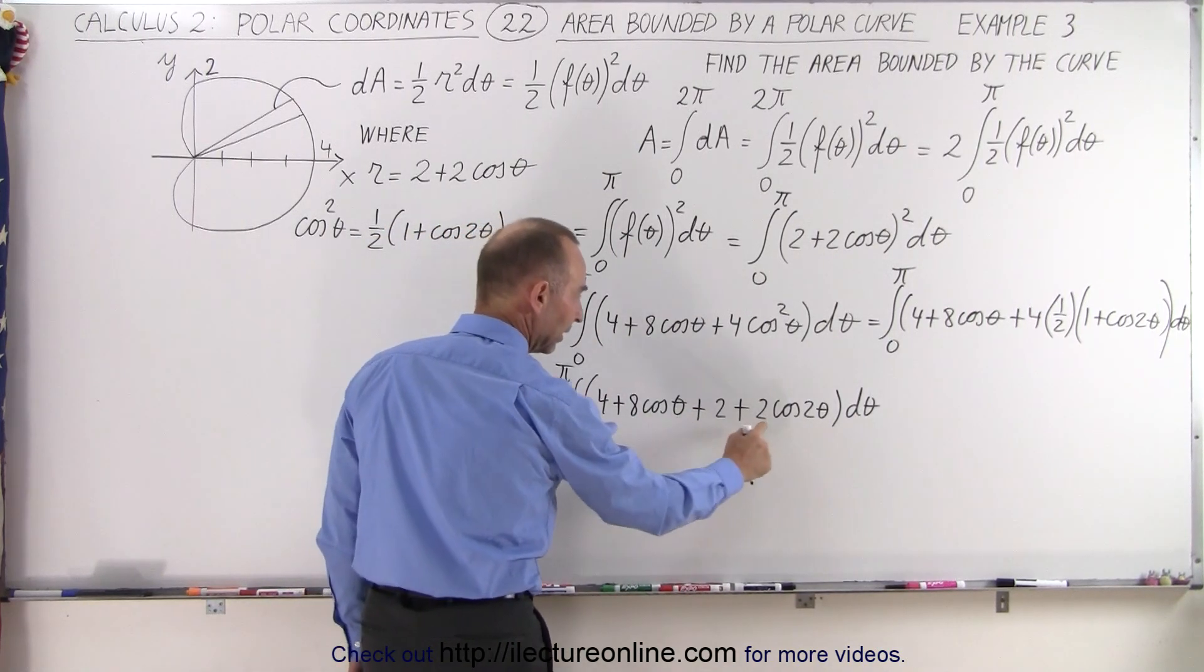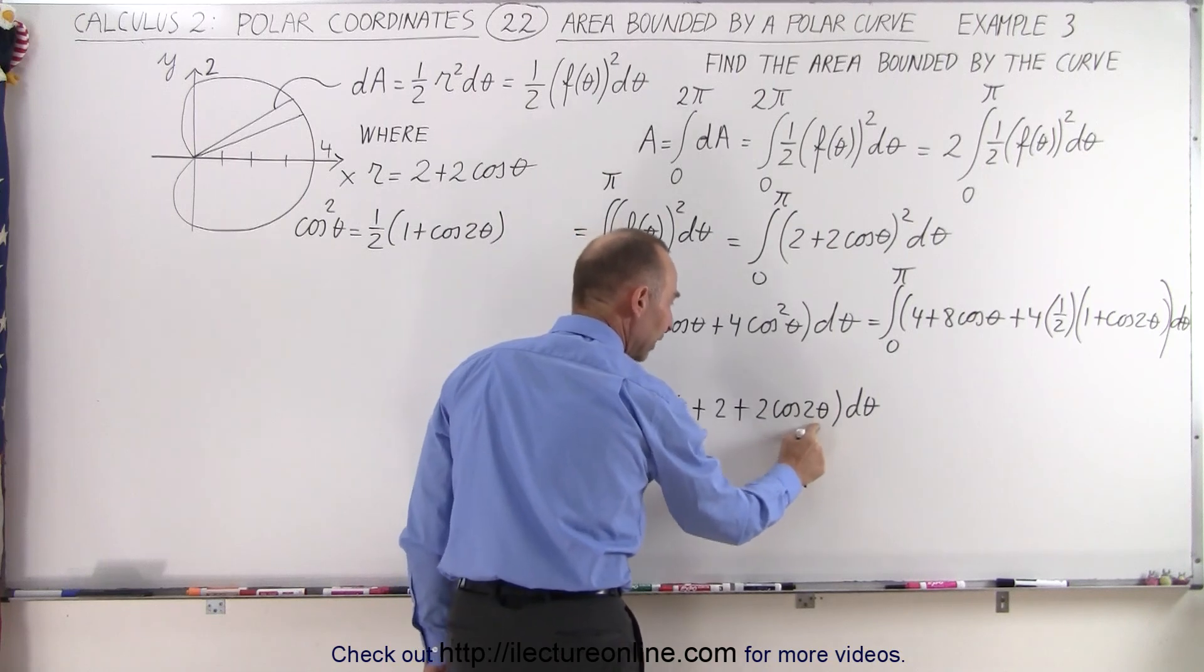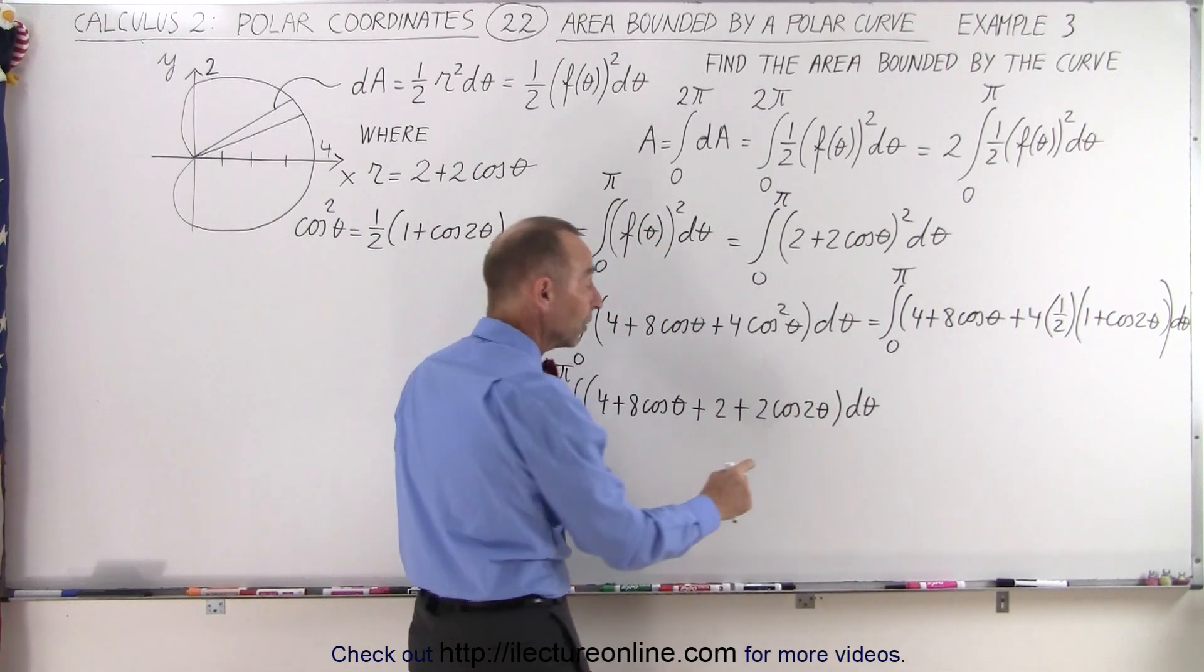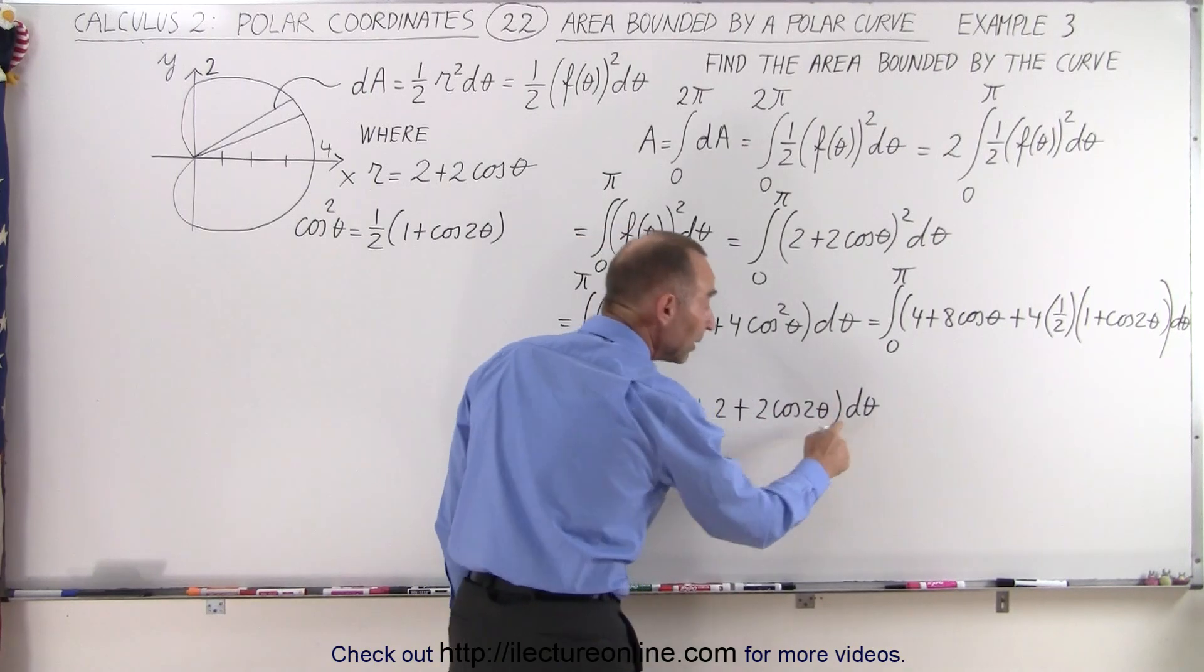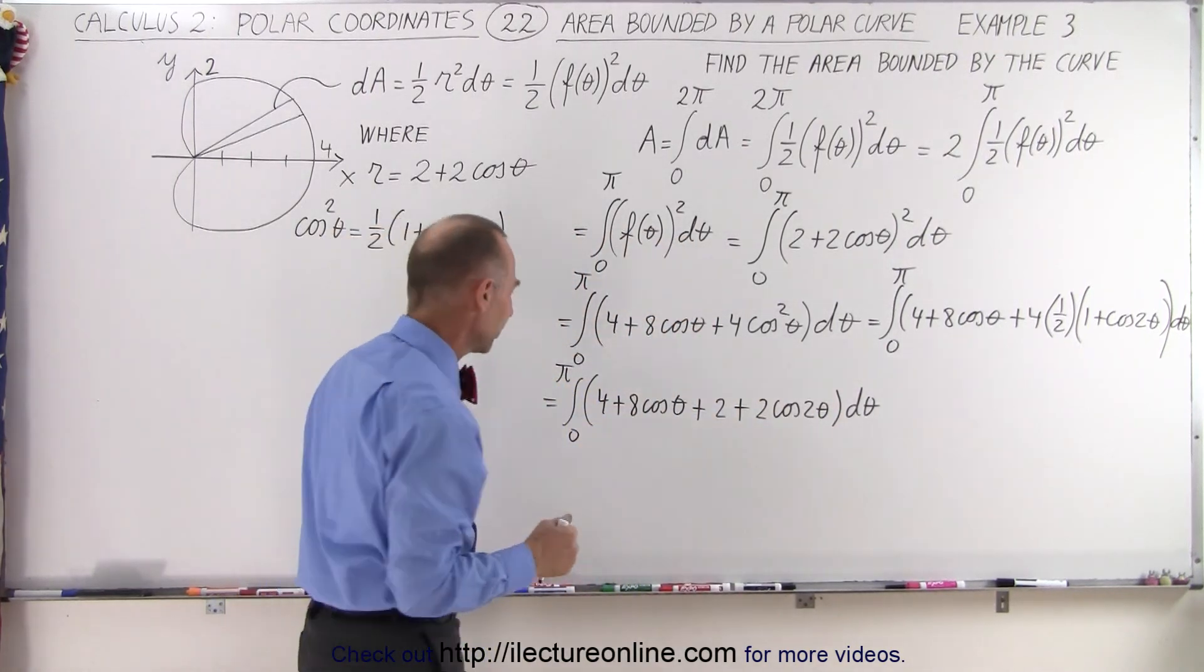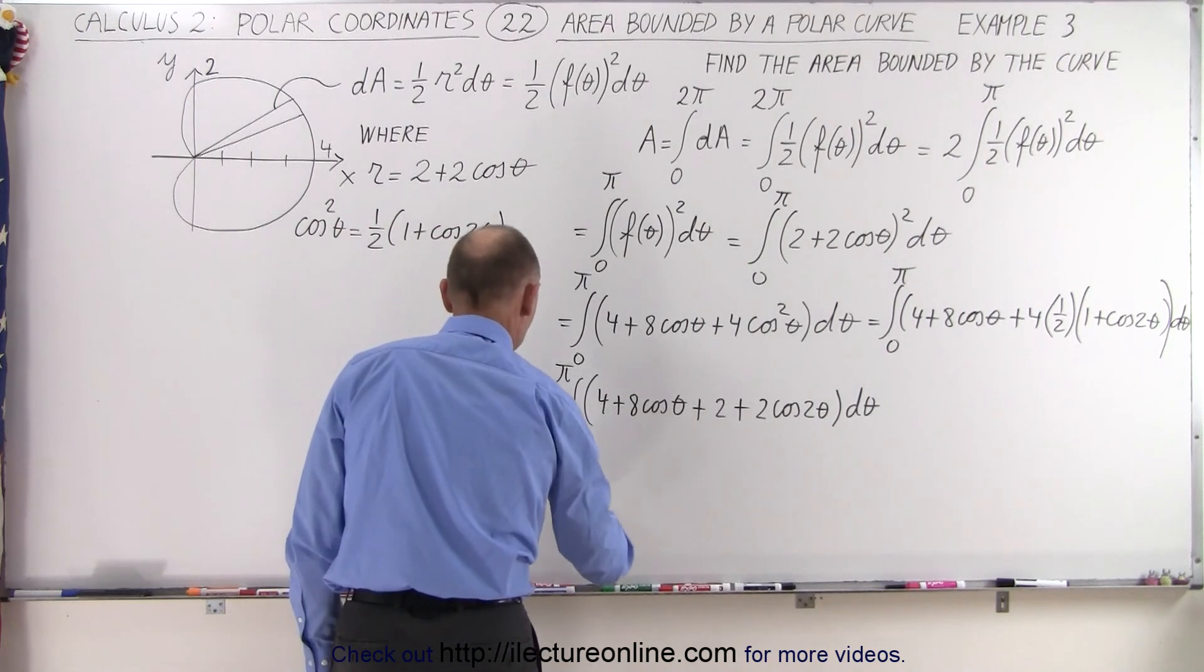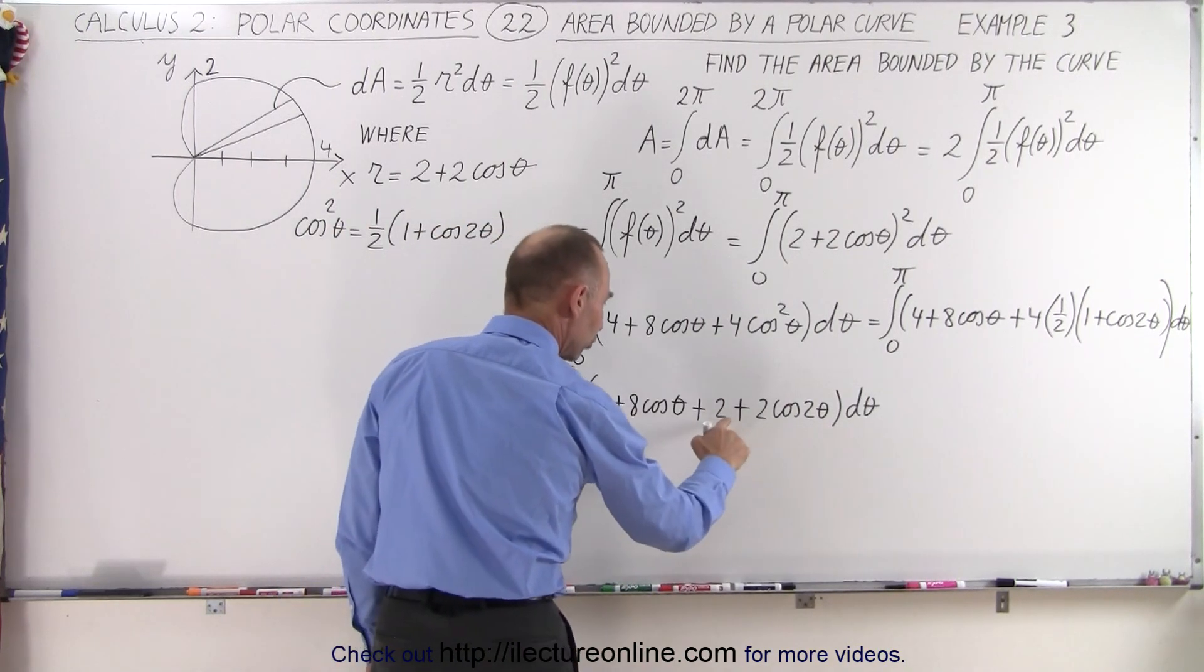We have 8 times the cosine of theta and 2 times the cosine of 2 theta d theta, which is nice because we have the cosine of 2 theta, so we need 2 d theta for the integrand. So we may want to write that separately.